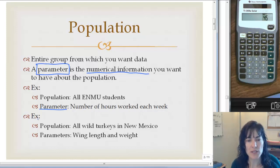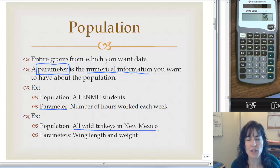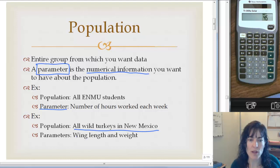Another example would be the population being all wild turkeys in New Mexico, and the parameters we would measure for these wild turkeys are wing length and weight.